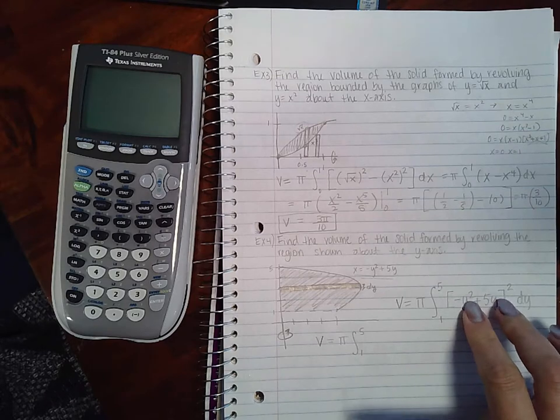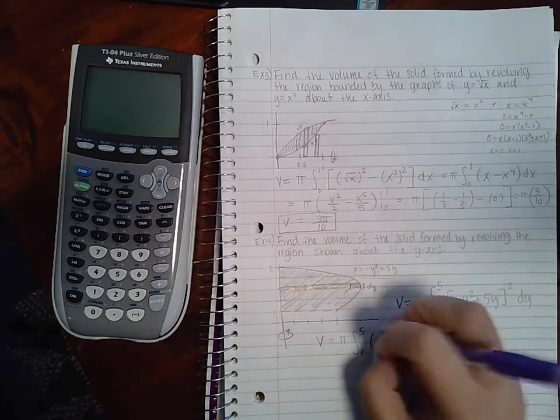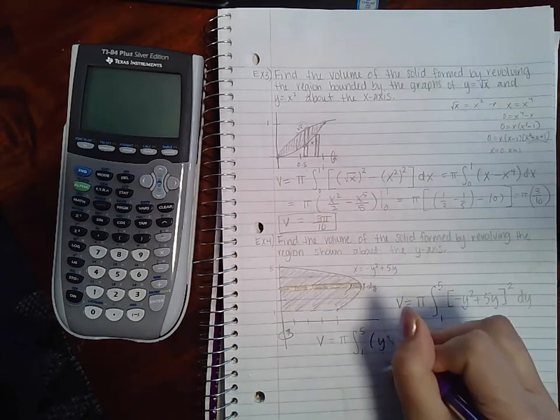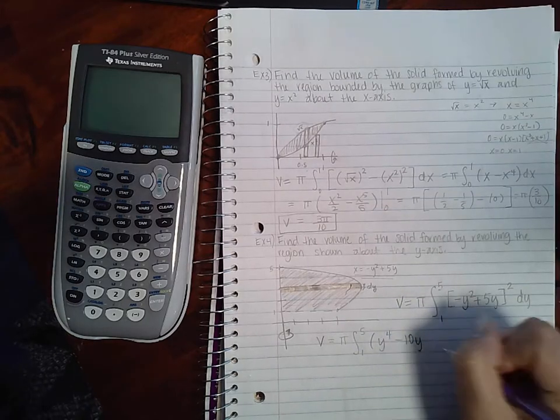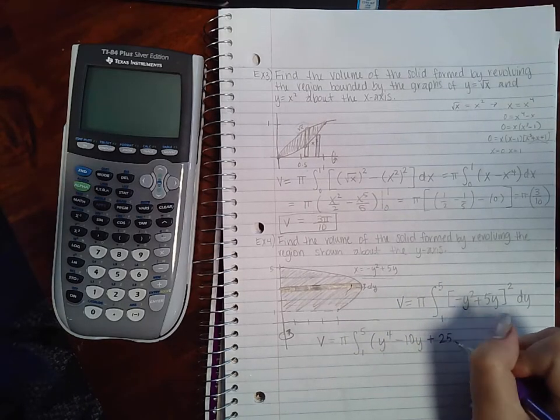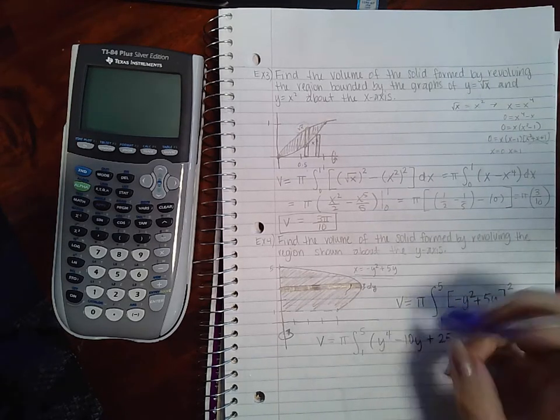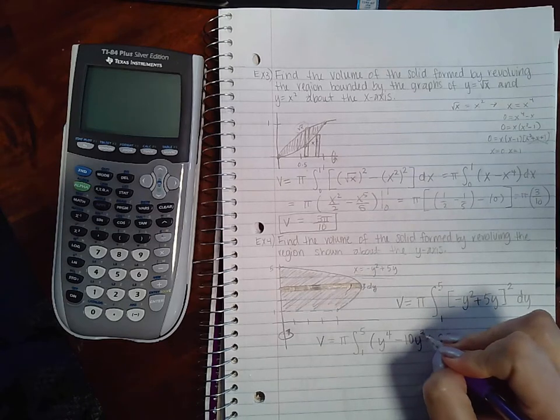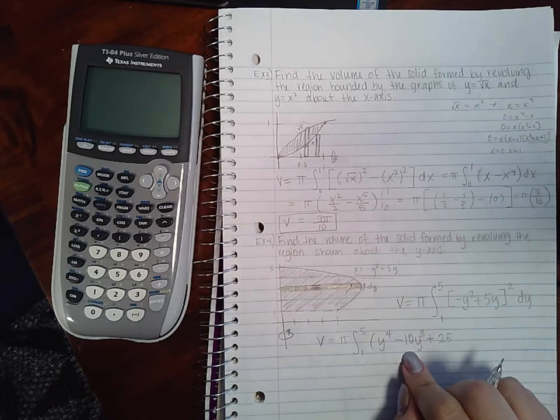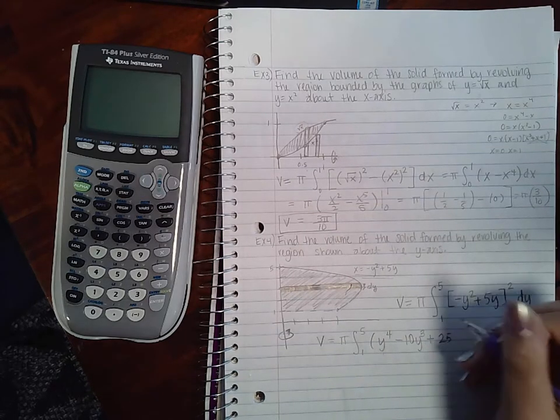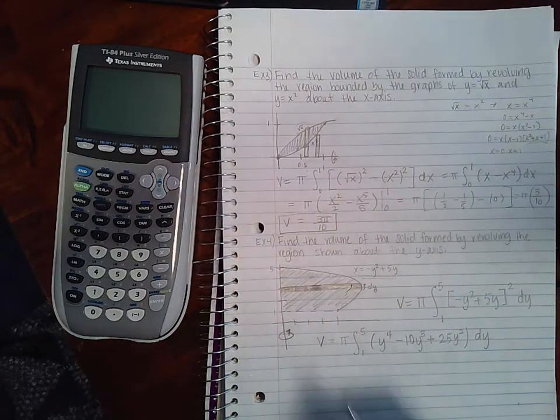So we get pi. I'm going to actually foil this out, so y squared times y squared is positive y to the fourth. Then negative 10y... oh, I'm sorry, 10y squared, nope, y cubed. That times that is negative 5y cubed, and then another negative 5y cubed is negative 10y cubed. And then this times itself is 25y squared. So now we can integrate.